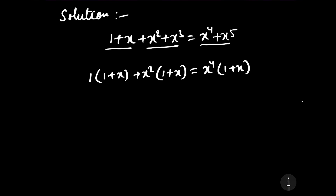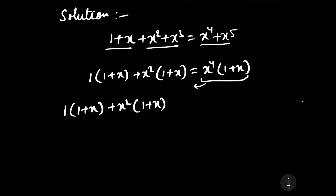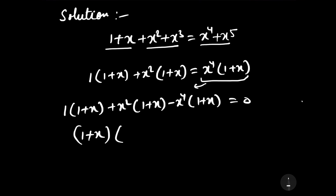Now we transpose everything to the LHS. It can be written as 1·(1 plus x) plus x²·(1 plus x) minus x⁴·(1 plus x) equals 0. Further, this can be written as (1 plus x) into (1 plus x squared minus x to the power 4) equals 0.